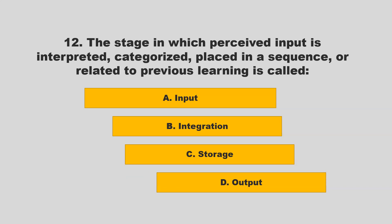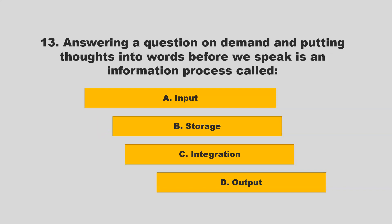The stage in which perceived input is interpreted, categorized, placed in a sequence, or related to previous learning is called: A) input; B) integration; C) storage; D) output. If you chose B — integration — you are correct.